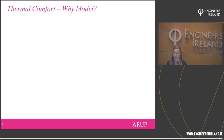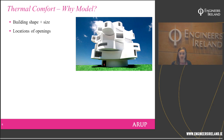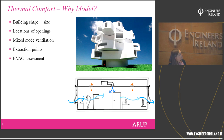The first thing to consider is why we might model thermal comfort rather than using hand calculations. Buildings are increasingly having very interesting and unusual shapes, sizes, and opening locations. It's not necessarily intuitive where thermal flows, heat, and cool areas will be. CFD modelling accounts for this — we can import the geometry exactly from AutoCAD or SketchUp models and model where hot and cold areas will be.